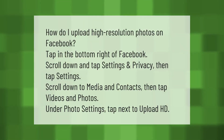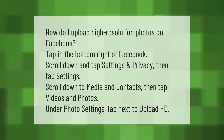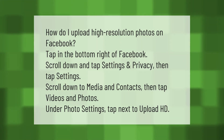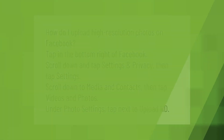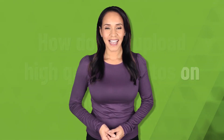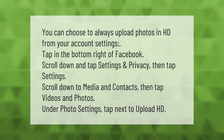How do I upload high resolution photos on Facebook? Tap in the bottom right of Facebook, scroll down and tap Settings and Privacy, then tap Settings. Scroll down to Media and Contacts, then tap Videos and Photos. Under Photo Settings, tap next to Upload HD. You can choose to always upload photos in HD from your account settings.